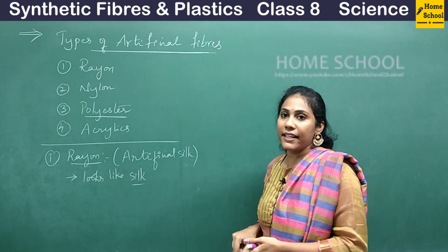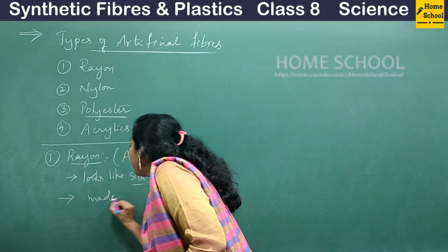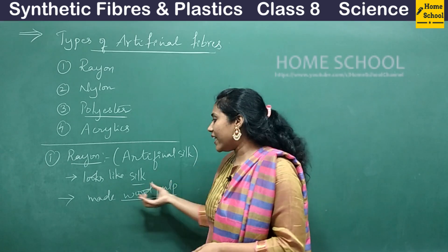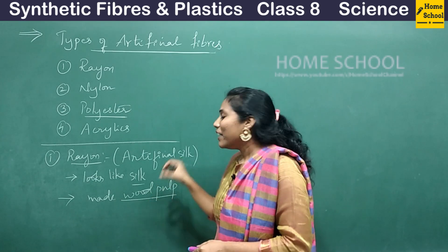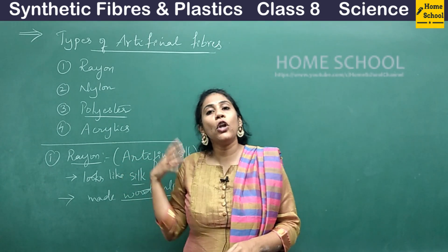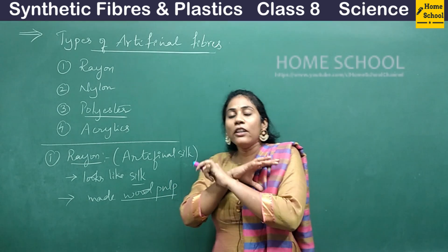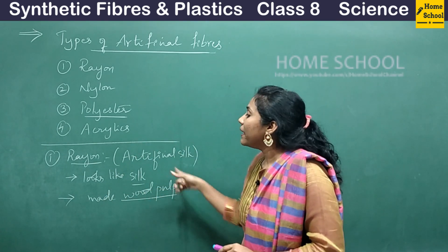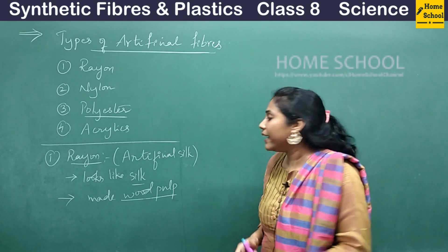Rayon is made from wood pulp. You might get the doubt — wood is a natural thing, so why do we call this an artificial fiber? Yes, we get the main raw material from wood pulp, but after that lots of chemicals are added and lots of chemical reactions are done. The chemicals present in the wood are completely modified by processing. That is why rayon is called an artificial fiber even though it comes from wood pulp.